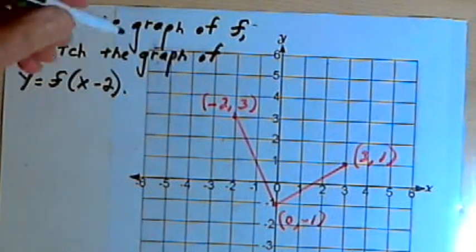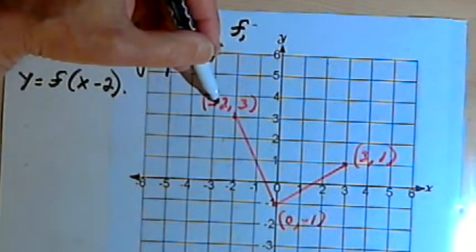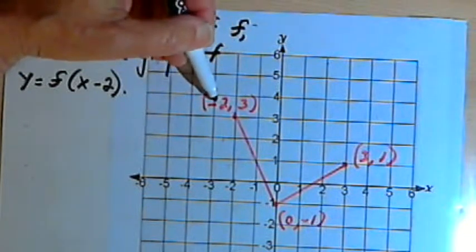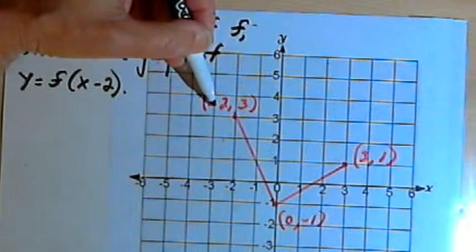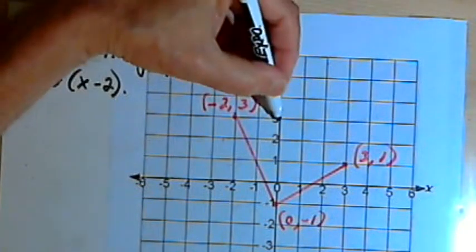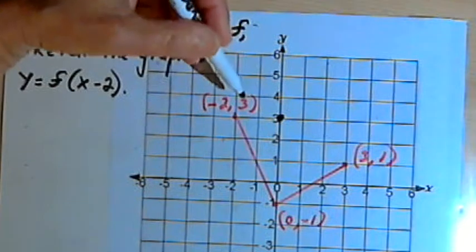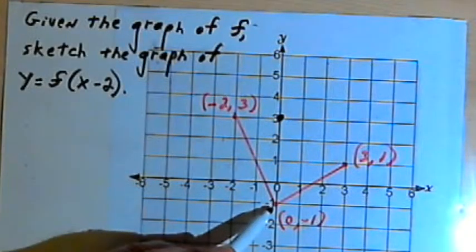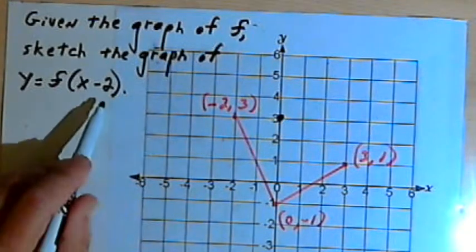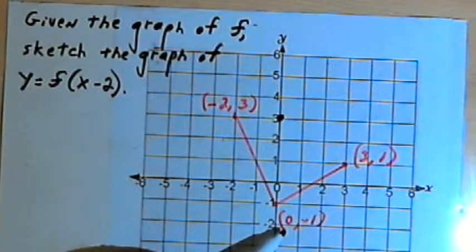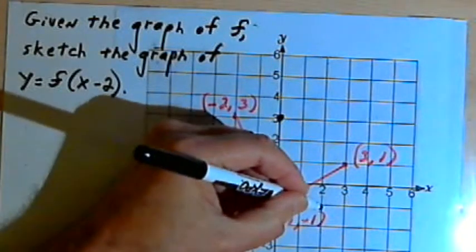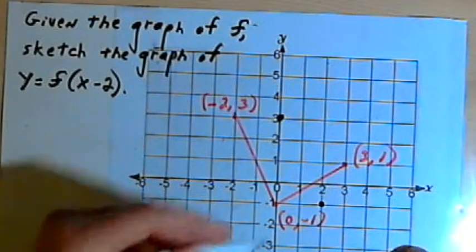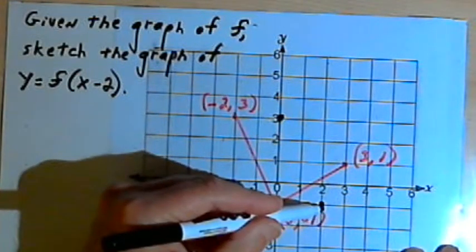So let's see how that's going to work. We'll take this first point, and we're going to add 2 to the x-coordinate, which is negative 2. Well, negative 2 plus 2 is 0, so I'll have a new point here at (0,3). Where I have the point (0,-1), I want to add 2 to the 0, which will make it a 2. So I'm going to have a point at (2,-1). Notice that I'm not changing my y-values, just the x-values.